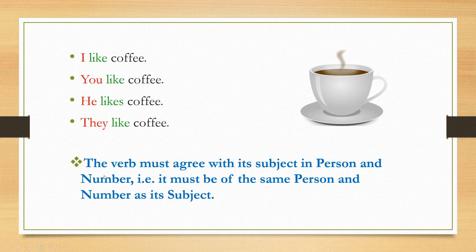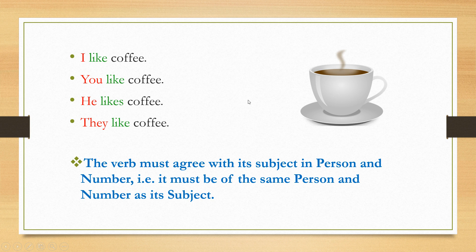We find that the verb must agree with its subject in person and number — it must be of the same person and number as its subject. One thing you may have noticed: nouns usually have an 's' ending in the plural, but verbs have no 's' ending in the plural. So with 'they' (plural), I use 'like' with no 's' ending, but with 'he' (singular), I use the singular verb 'likes' where you get the 's' ending — which is exactly opposite to nouns, where we add 's' or 'es' for the plural form.